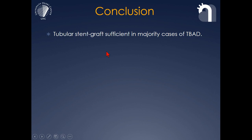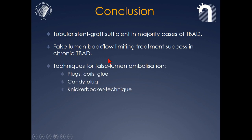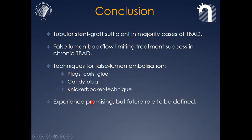In conclusion, for chronic type B dissection, tubular stent grafts are sufficient in a majority of cases, but false lumen backflow limits the treatment success. There are a number of techniques to occlude that false lumen backflow, and the early experience is promising. Thank you very much.